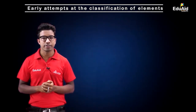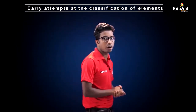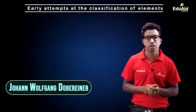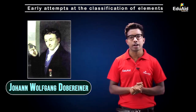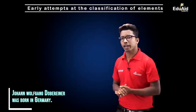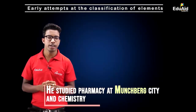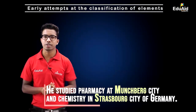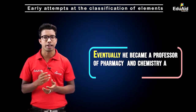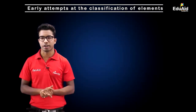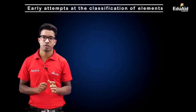Among various scientists who tried to classify elements according to their properties, the first attempt was done by Johan Wolfgang Döbereiner. Döbereiner was born in Germany; he studied pharmacy at Münchberg and chemistry at Strasbourg, and he eventually became the Professor of Pharmacy and Chemistry at the University of Jena. We are interested in how he classified elements.